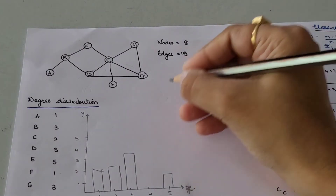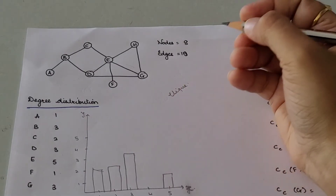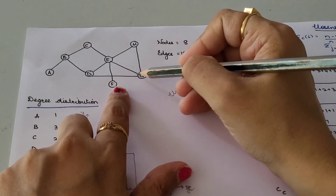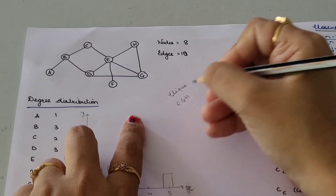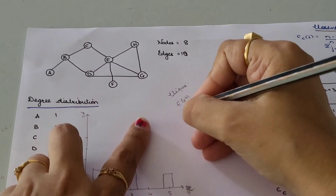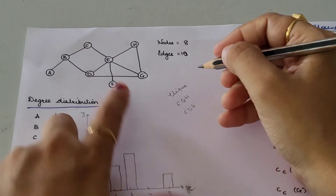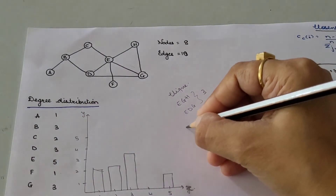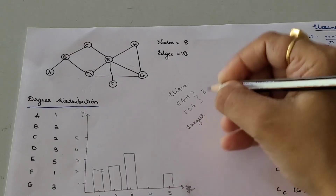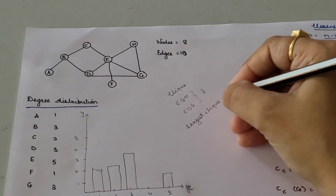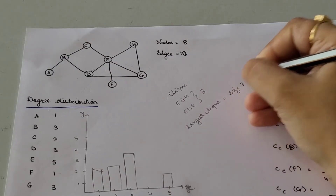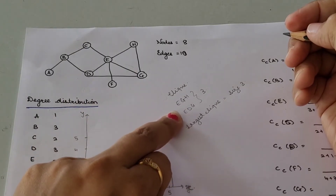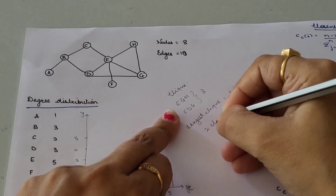Now in order to calculate the cliques for the given graph, consider the triangles. We have triangle E-G-H — that is one triangle. Consider the second triangle E-D-G. Both triangles have size 3, so the largest clique is of size 3. In total you have only two cliques for the given graph — these two triangles.